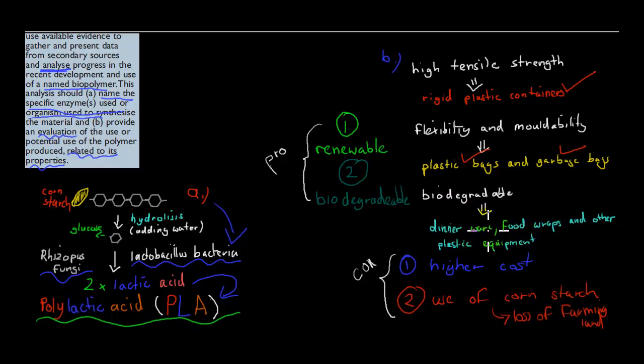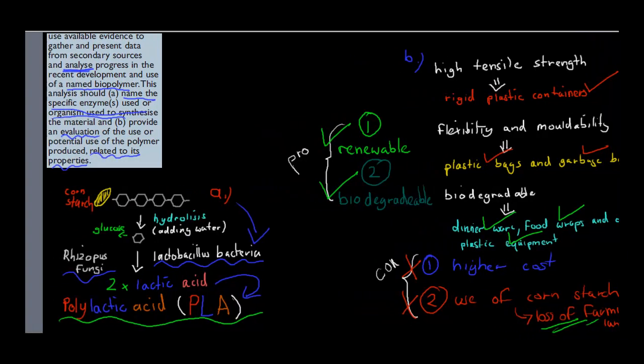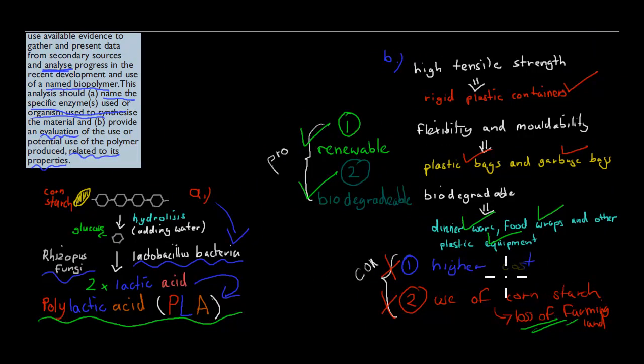Now the advantages and disadvantages. The advantages were that it's renewable and biodegradable. Some disadvantages were that it has a much higher cost at the moment than normal fossil fuel petrochemicals. And also we use corn at the moment to produce it, which means we have a loss of farming land and we only have a certain amount of supply in terms of farming land. So overall the use will increase with time but at the moment it's still quite expensive, and we need to find a difference for making the same bioplastic.